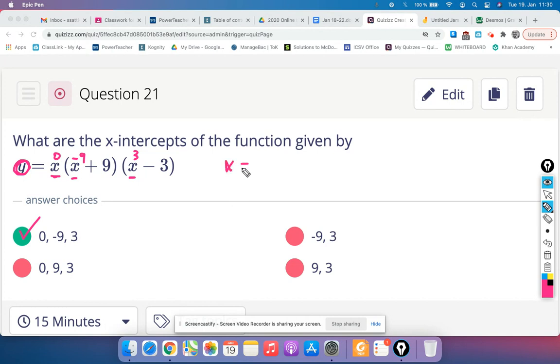Essentially we're just setting each one of these factors equal to 0 and solving for x.